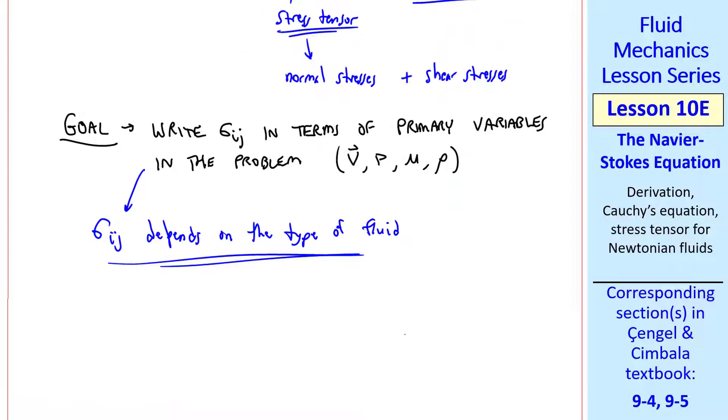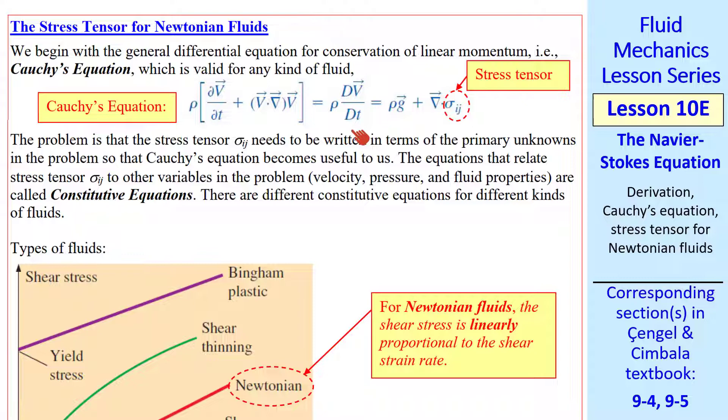We repeat Cauchy's equation here. Rho dv dt, the material acceleration, is rho g plus del dot sigma ij, the stress tensor. dv dt itself, the material acceleration, can be expanded like this as we saw in a previous lesson. And as I said, the stress tensor sigma ij needs to be written in terms of our other variables so that Cauchy's equation becomes useful. Equations that relate stress tensor sigma ij to other variables in the problem are called constitutive equations. These constitutive equations depend on the type of fluid.